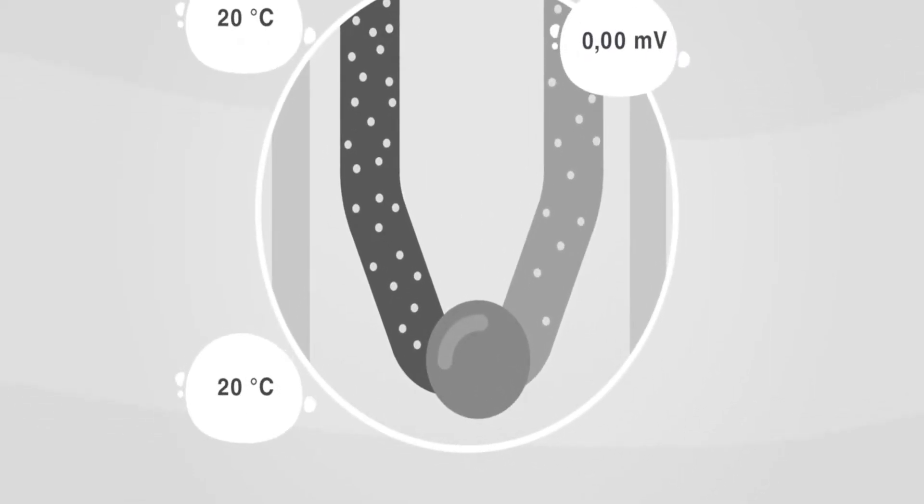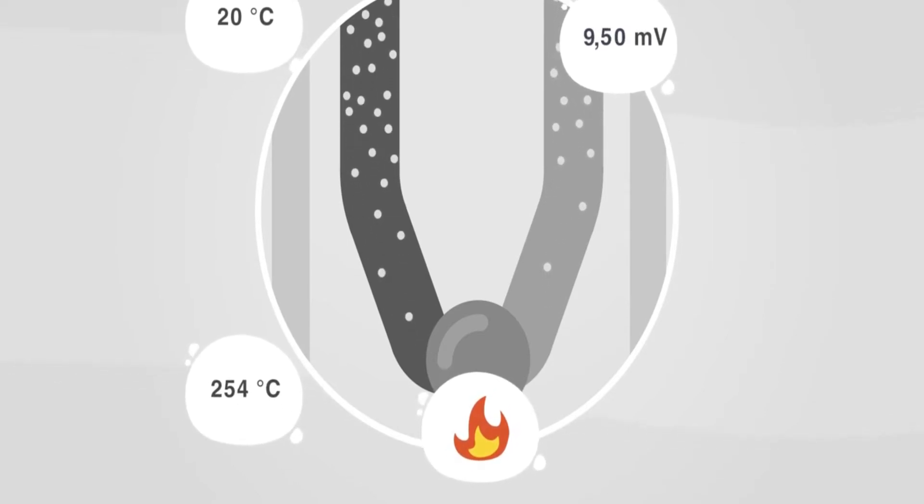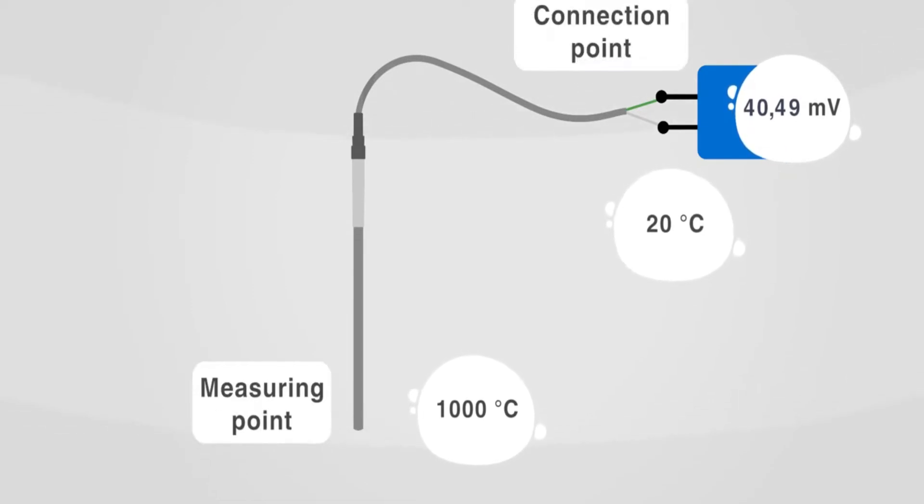When the temperature at the measuring point rises or drops, the electron density of each metal also changes. This altered electron density, i.e., the voltage, is measured at the wire ends. A thermocouple never measures the absolute temperature, but always the differential temperature between the measuring point and the connection point.